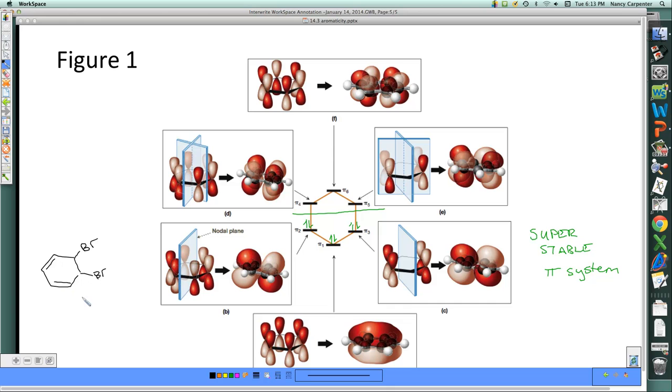But if my bromine undergoes substitution instead of addition, you betcha. I got a really nice stable system. 6 electrons, magic number, cyclic, planar, conjugated. All is right in benzene's world.